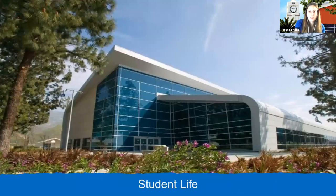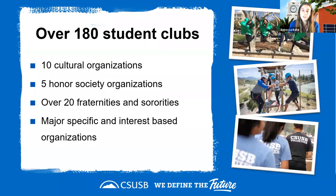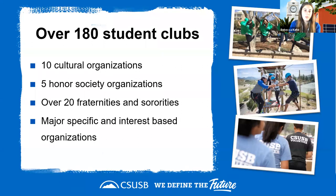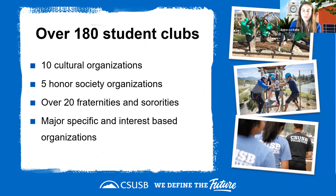For student life, the campus has approximately 180 active student clubs across a variety of organization types. If a student wants to start their own organization, the process is straightforward: they typically need five founding members and can then begin recruiting and building their club.